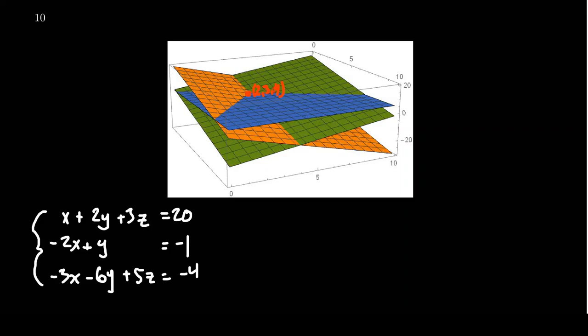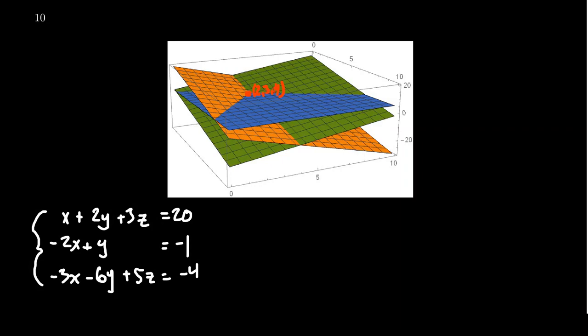If you recall a previous example from this lecture series, Example 113, we had a system of three linear equations. If we were to graph the planes associated with each of these linear equations, you get the blue, orange, and green planes illustrated here. Because of the incline of the three planes, there is one point of intersection common to all three. You can see this point right here, which would be (2, 3, 4). So in the three-dimensional case, this is an instance of the independent, consistent case — all planes intersect at a unique point.